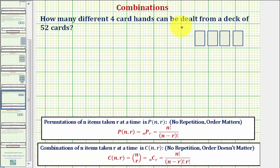How many different four card hands can be dealt from a deck of 52 cards? Whenever we have a problem like this where we have n items taken r at a time, or in this case, 52 cards taken four at a time, our first question should be: does the order matter?